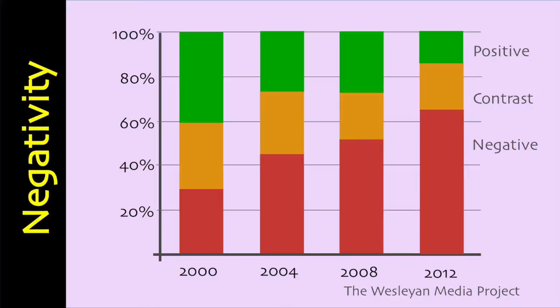Contrary to popular belief, campaigns aren't all negative, but they're getting there. It's up to you as the campaign manager to determine how negative you want to go. In the US, negative campaigning is slinging more mud than ever before, with parties spending close to 70% of their advertising budget on negative campaigning. The Westland Media Project compiled this chart to show how political advertising has become distinctly more negative over the past few American presidential election cycles.